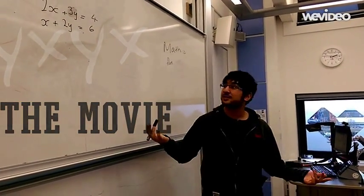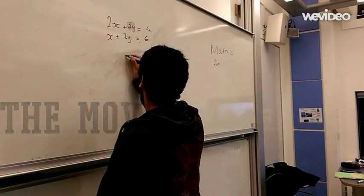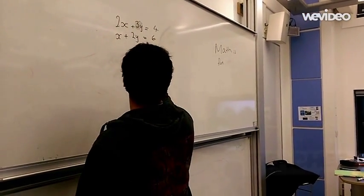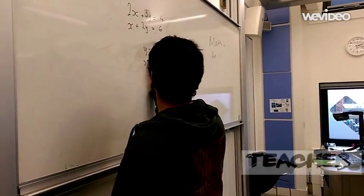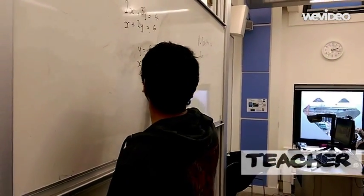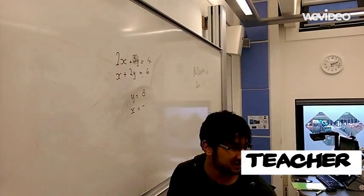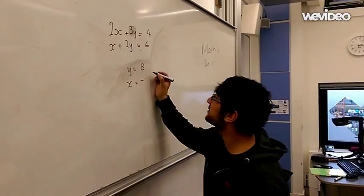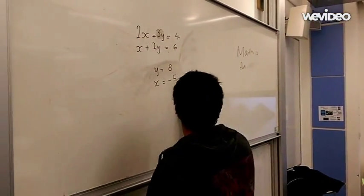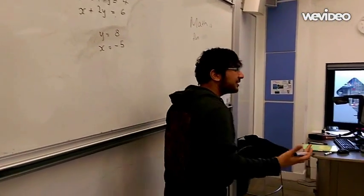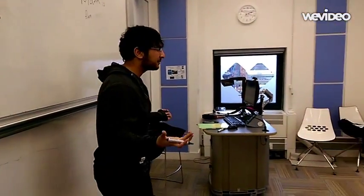Very easy. We just say y equals 8, x equals minus 5. Clear, it's clear. Straightforward.